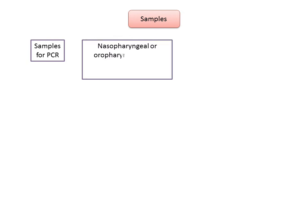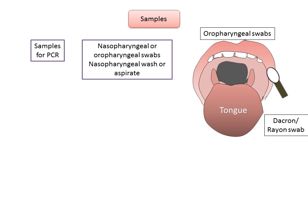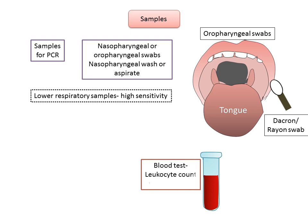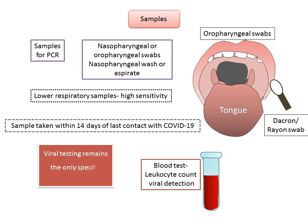Let's take a look at the type of sample we need to collect for PCR. Nasopharyngeal or oropharyngeal swabs can be collected, as well as nasopharyngeal wash or aspirate. To collect an oropharyngeal swab, a dacron or rayon swab is used, rubbed on the oropharyngeal region to collect the specimen. Cotton swabs or wood shafts can interfere with RT-PCR assays; hence, sterile dacron or rayon swabs should only be used. Samples can be collected from the upper or lower respiratory tract, but lower respiratory tract samples have higher sensitivity. Additionally, blood tests can be done for leukocyte count and viral detection. The sample for PCR should be collected within 14 days of last contact with COVID-19. Till date, viral testing remains the only specific method of diagnosis for COVID-19.